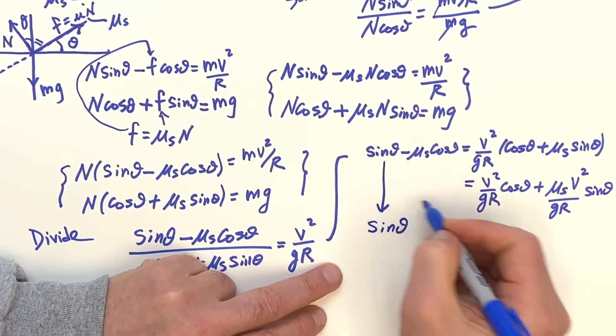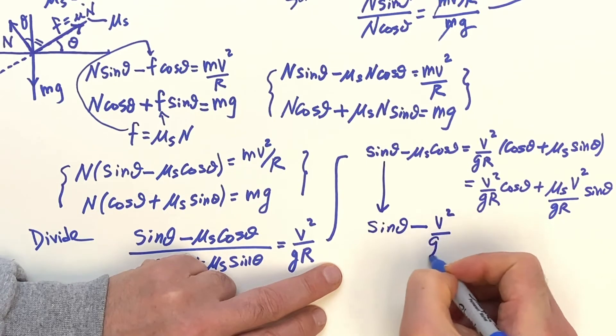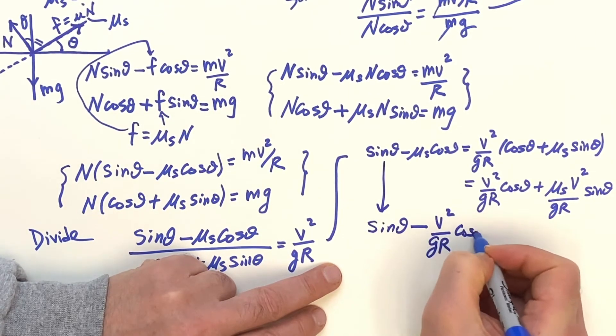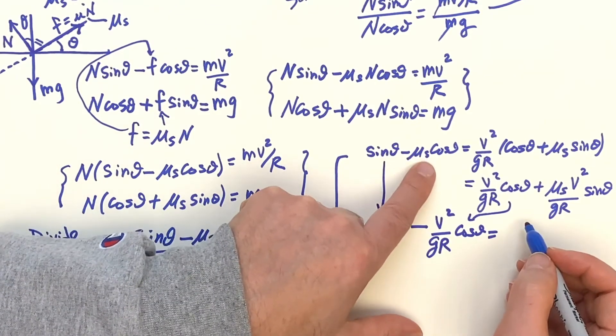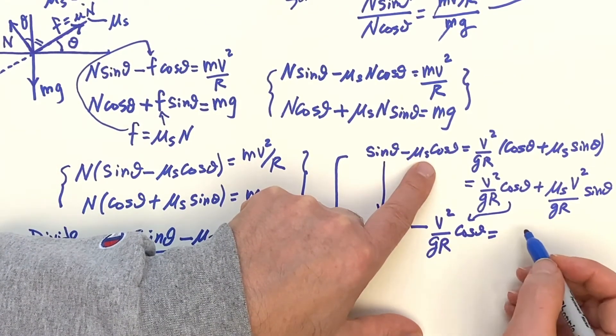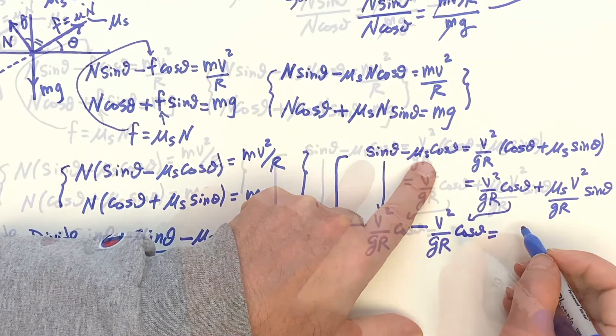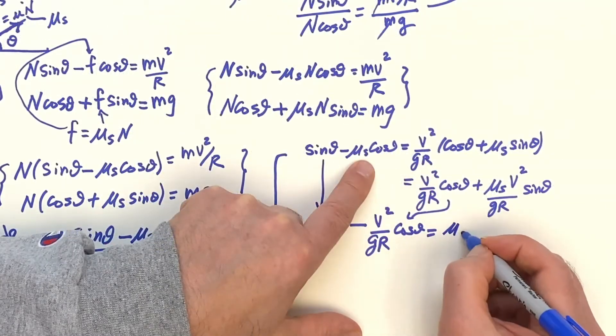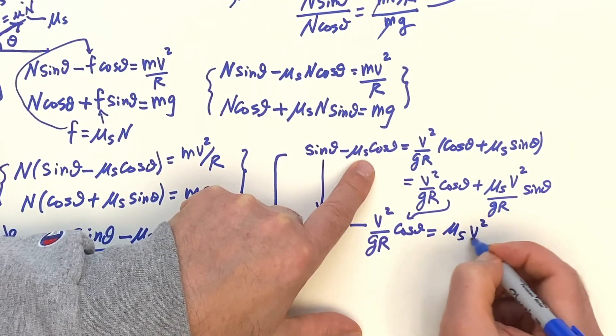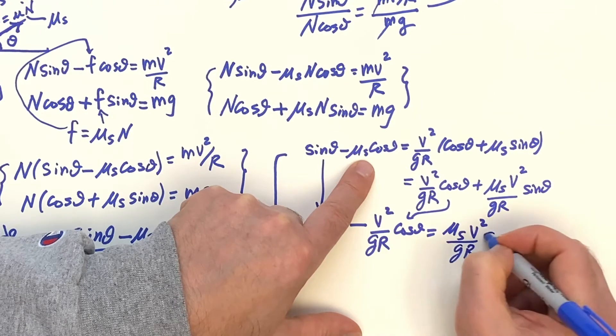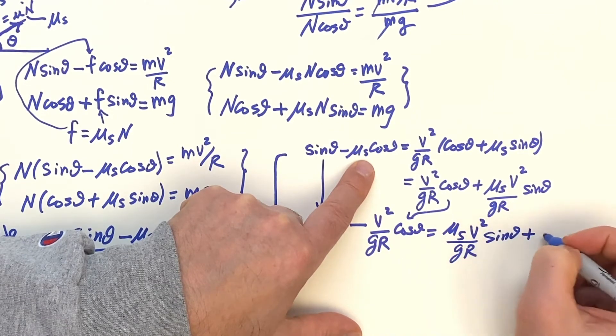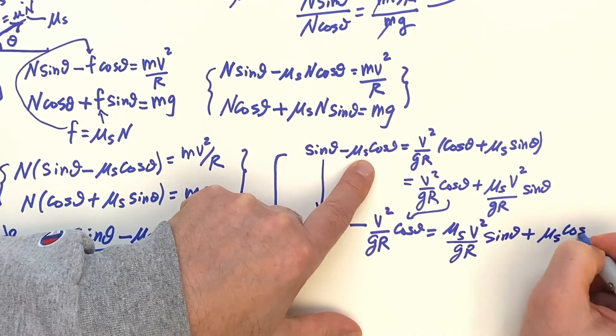That's this one. And then minus V squared over G, R cosine theta. That's this one. And then put this on the other side of the equation. So we'll have Mu, S, V squared over G, R, sine of theta plus U, S cosine theta.